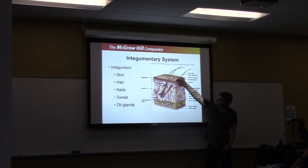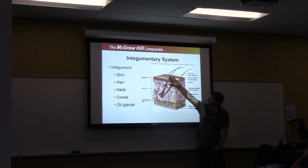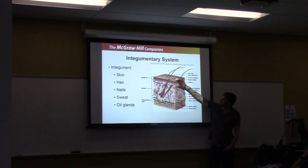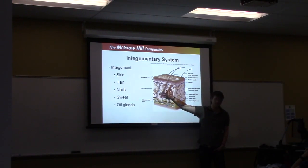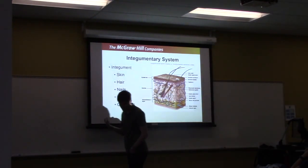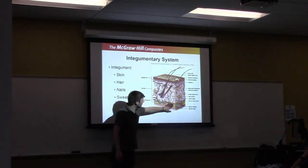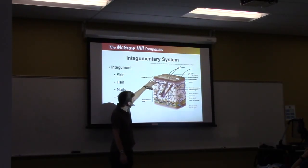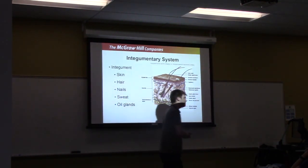Generally speaking, with skin infections, the more superficial they are, the milder they are. Mild infections happen in the epidermis; as they go deeper into the dermis and subcutaneous layer, they become more serious. The main reason is that the dermis and subcutaneous layer contain blood vessels — the organism can potentially enter these and disseminate throughout the body.